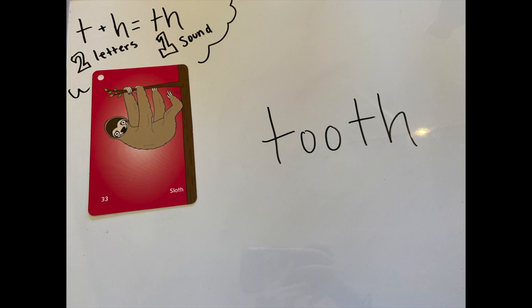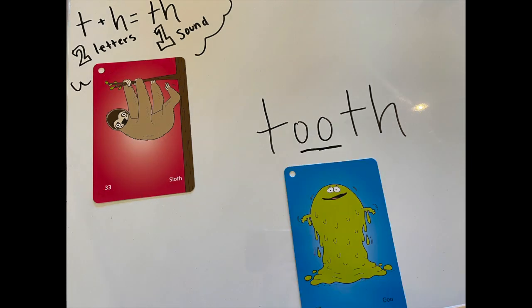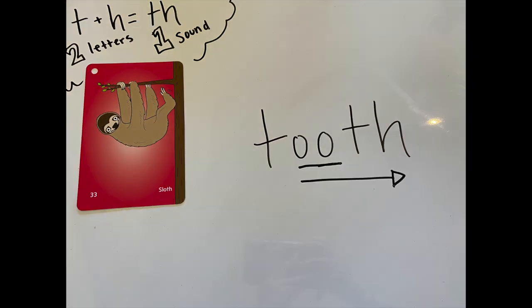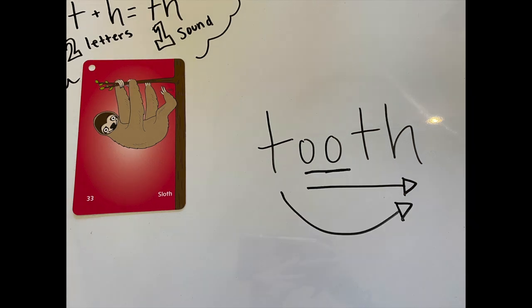Alrighty, Ms. Palacios wanted to give you another tricky one, but I know you won't get tricked. We are looking here at our middle vowel — I see two O's. I remember that I have a card for that: my goo card. When I see two O's together, it makes the OOH sound. So my middle vowel goes OOH. Now we slide right — OOH, TH. Add the beginning sound: TOOTH. My word is tooth.